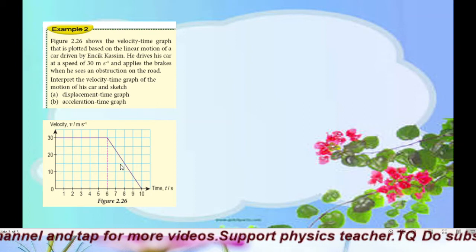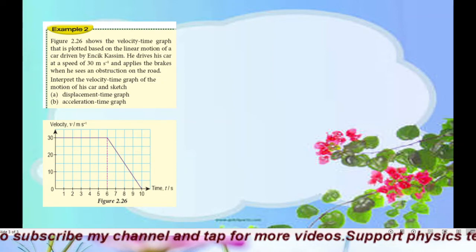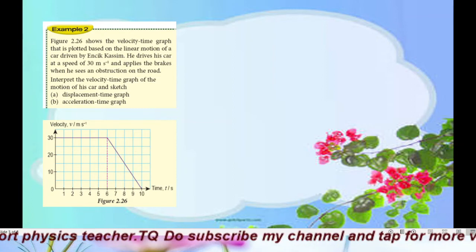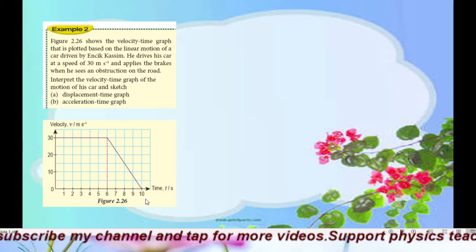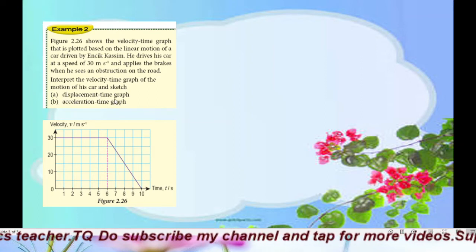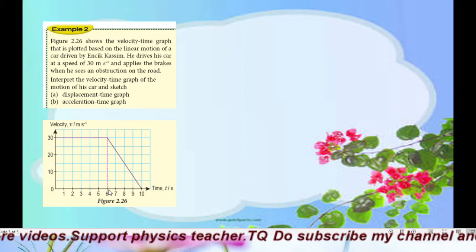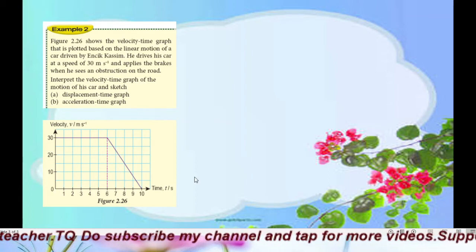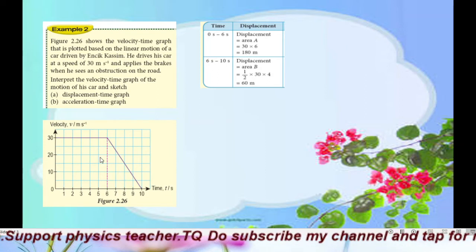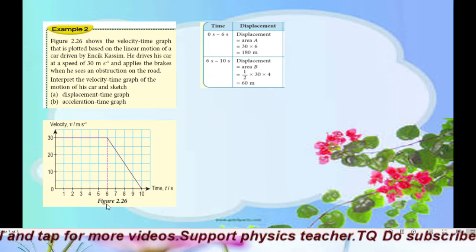The gradient from 6 to 10 seconds is negative. For a V-against-T graph, remember: gradient equals acceleration, and area under the graph equals displacement. To sketch the displacement-time graph, calculate displacement for each section. From 0 to 6 seconds, the area is a rectangle: 30 times 6 equals 180 meters. For 6 to 10 seconds, the area is a triangle: half times 30 times 4 equals 60 meters.